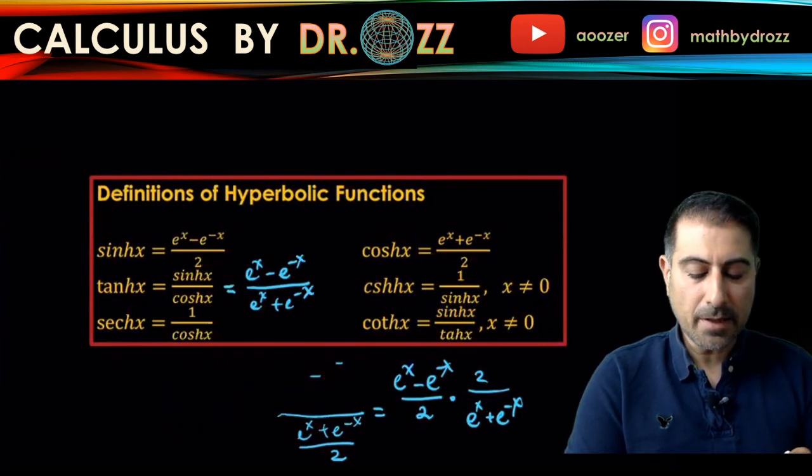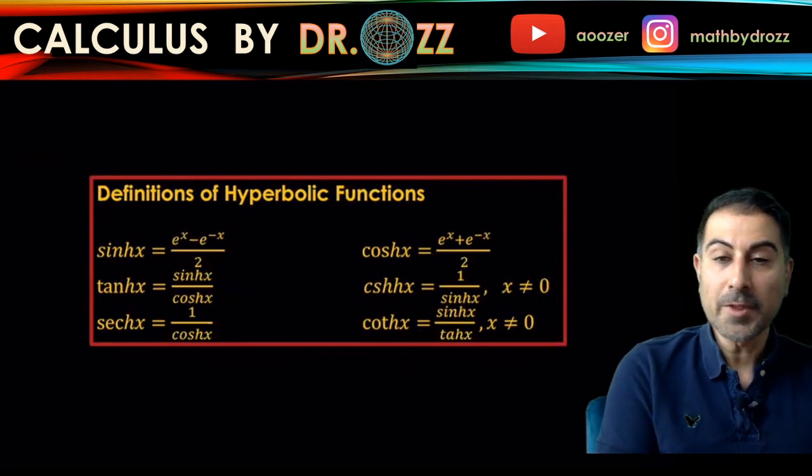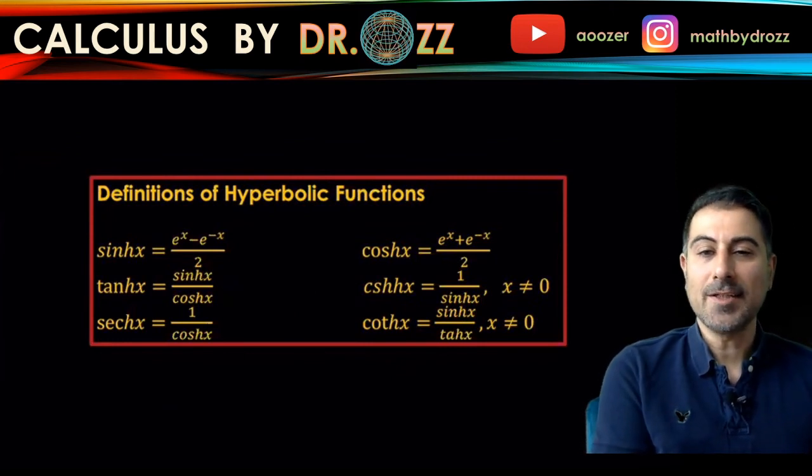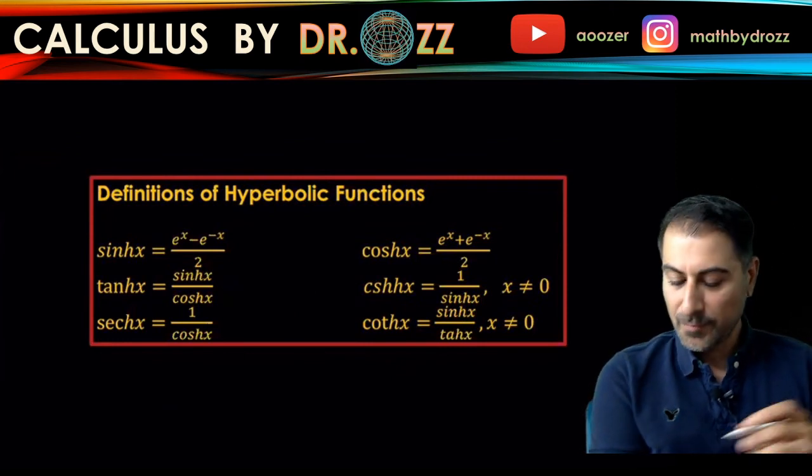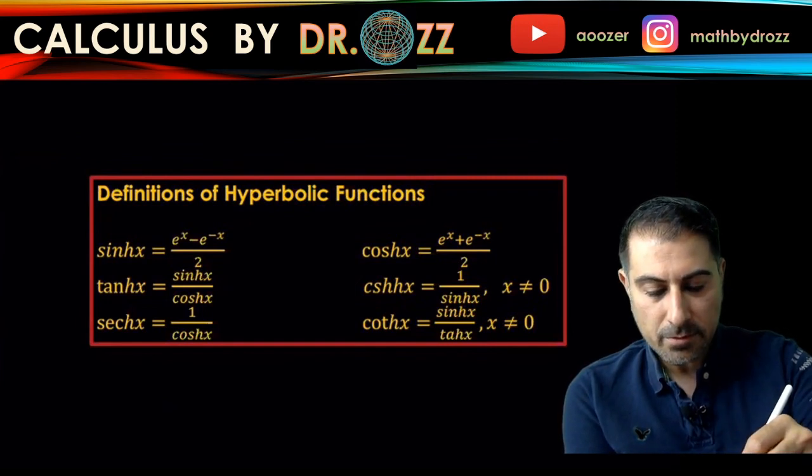That's the very first formula we have there: e to the x minus e to the minus x over 2. Okay, so I'm going to go ahead and type that in here.